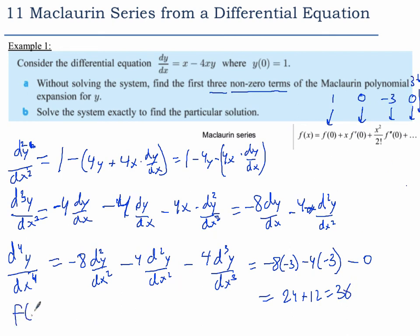So then the Maclaurin series is going to be 1 minus 3 over 2 factorial, so 3 over 2 times x squared.